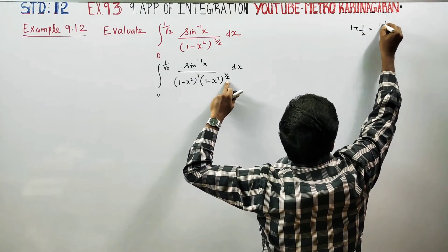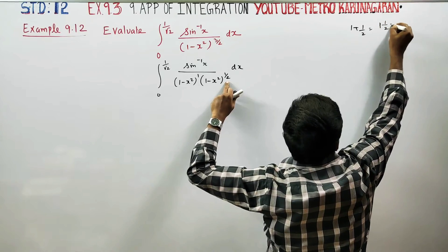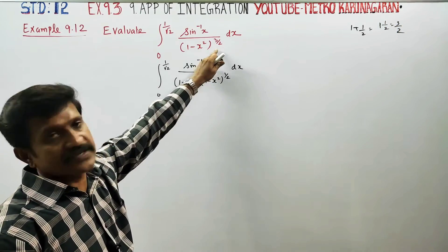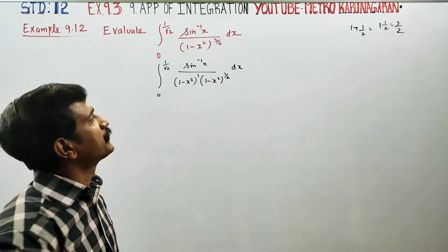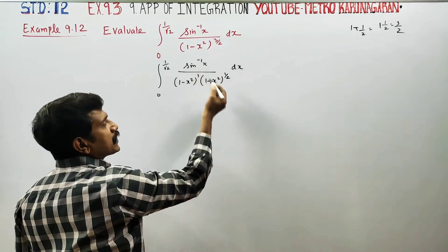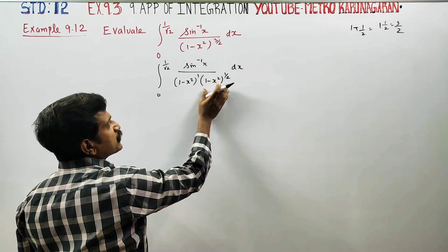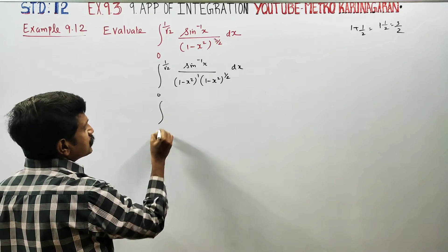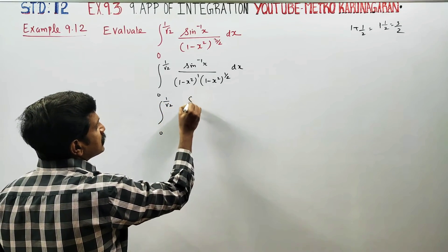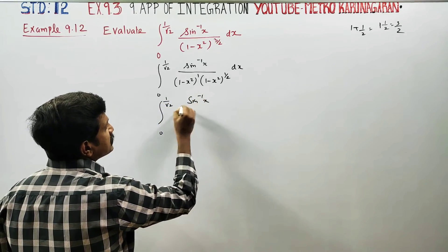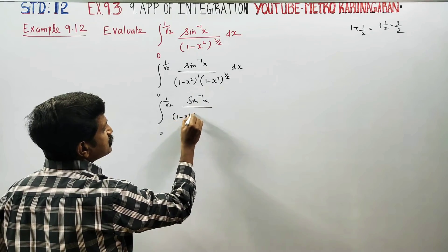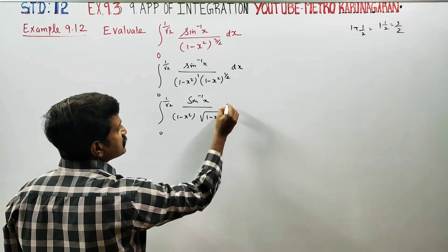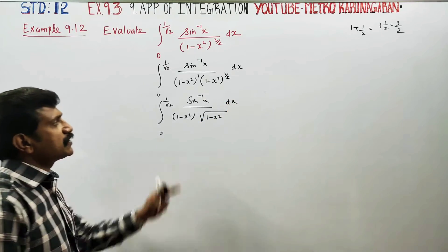So (1 minus x²) to the power 1/2 is root of (1 minus x²). The next stage rewrites the integral from 0 to 1/√2 of sin⁻¹x divided by (1 minus x²), times root of (1 minus x²) dx. Now we have modifications using the substitution method.